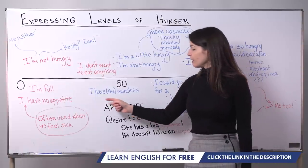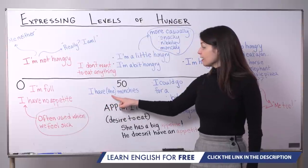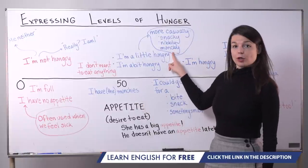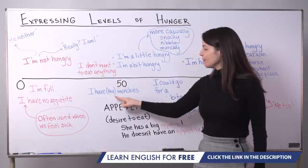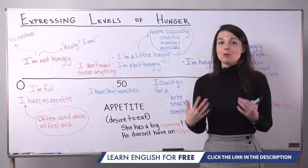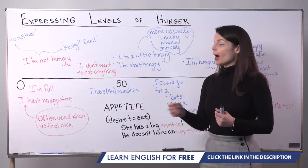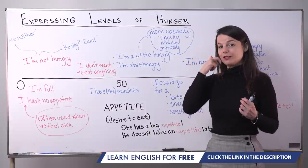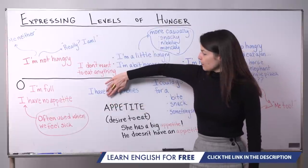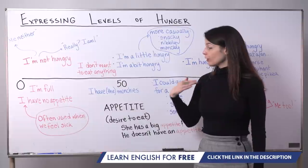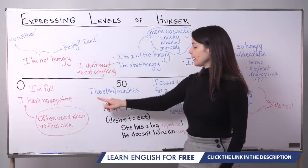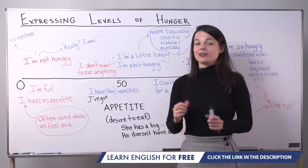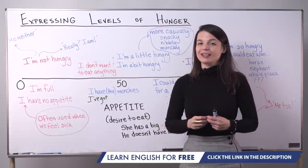Finally in this section, there's the phrase 'I have the munchies.' Munchies has the same idea as 'munchy' and is a cute expression meaning I want to snack — usually junk food like chips, candy, or cookies. You might hear 'I have munchies' without 'the,' but 'I have the munchies' is preferred. You might also hear 'I've got the munchies,' which means the same thing: I want to eat some snacks, usually junk food.